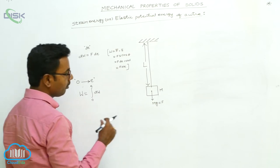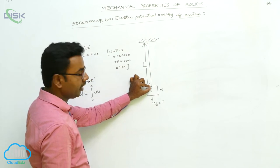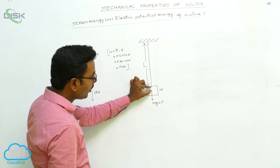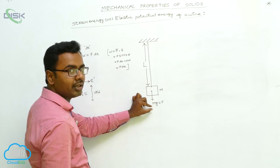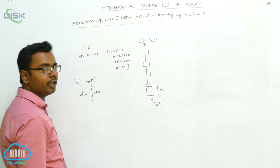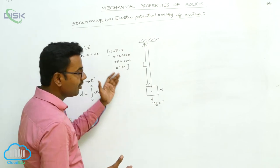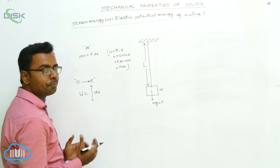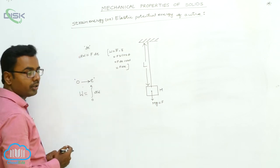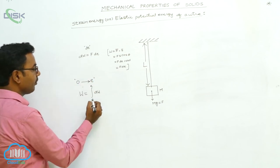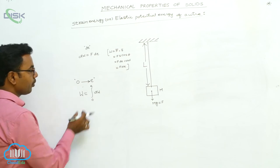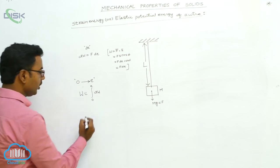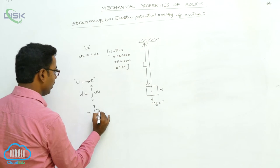We perform integration because for every small elongation DE, a small work DW must be done. The total elongation E consists of many small DEs, and to produce all of them we must do many DWs. Adding all DWs together gives the total work done. So total work done W = ∫₀ᴱ DW = ∫₀ᴱ F·DE.